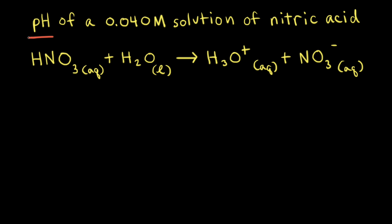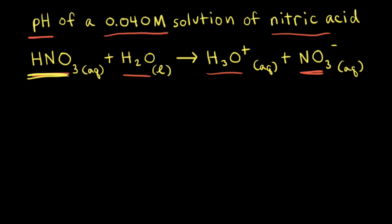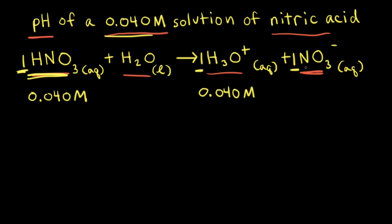Let's calculate the pH of a strong acid solution. In this case, we have a 0.040 molar solution of nitric acid. Nitric acid, HNO3, reacts with water to form hydronium, H3O+, and nitrate, NO3-, which is the conjugate base to HNO3. Because nitric acid is a strong acid, we assume the reaction goes to completion. Therefore, if the initial concentration of nitric acid is 0.040 molar, looking at our molar ratios in the balanced equation — there's a one in front of nitric acid, one in front of hydronium, and one in front of nitrate — the concentration of hydronium would also be 0.040 molar, and the nitrate anion would also have a concentration of 0.040 molar.